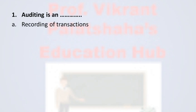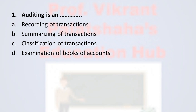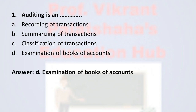Question number one: auditing is — option A recording of transactions, option B summarizing of transactions, option C classification of transactions, and option D examination of books of accounts. The correct option is option D, examination of books of accounts.